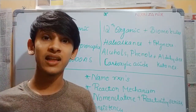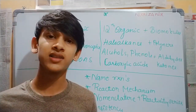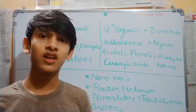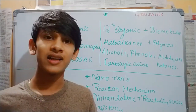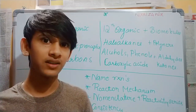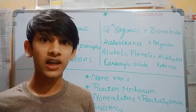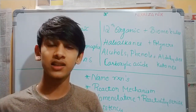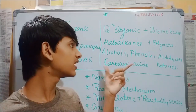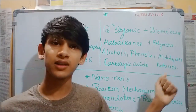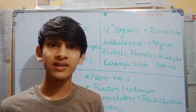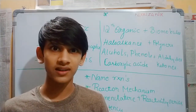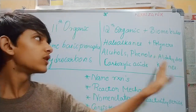Next are alcohols, phenols, and aldehydes — there are many reactions in these chapters. Preparation reactions you must have at the tip of your hand. Next are carboxylic acids, biomolecules, and polymers. You have to find the higher-level thinking concepts in these chapters, including advanced organic chemistry.